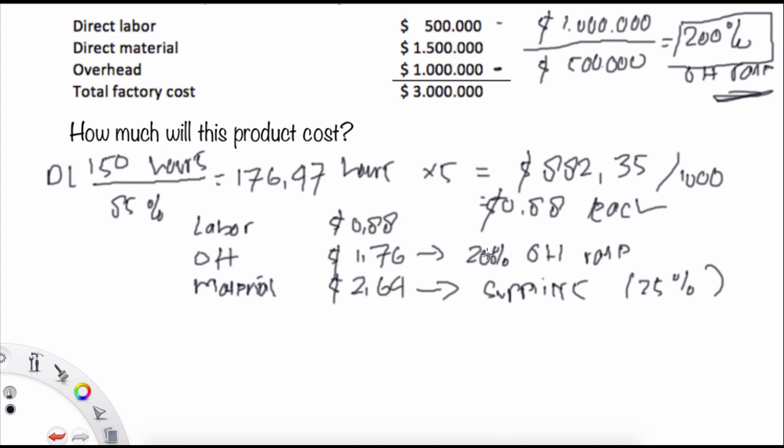The overhead is 200% of labor cost. So it's 2 times the labor cost. So $0.88 here times 2 will be $1.76.